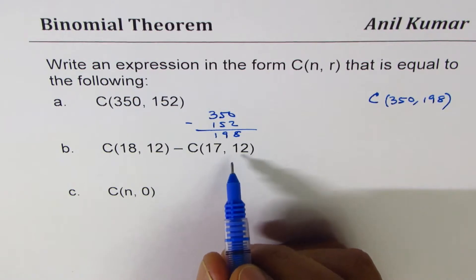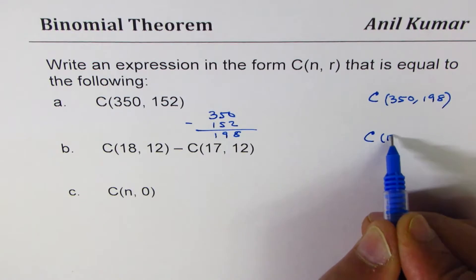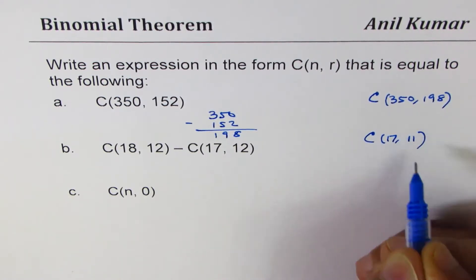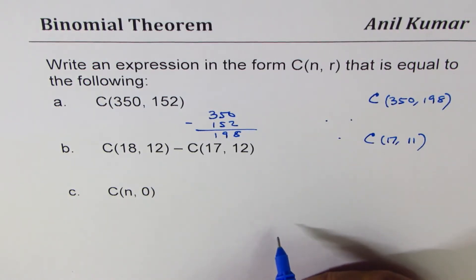Now here we get the combination. So we could write this as C(17,11), right? So that comes from the Pascal's triangle. You add the two terms to get the third one. Perfect.